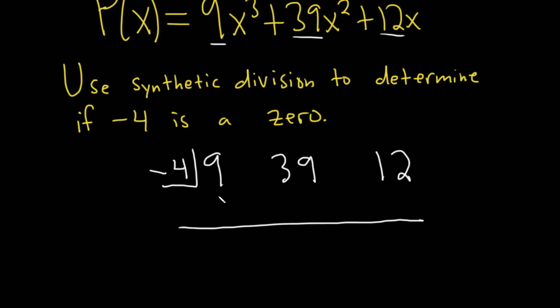So the first thing you do with synthetic division is bring down the 9. And then you multiply 9 times negative 4 is negative 36. Then you add, so that will give us 3.